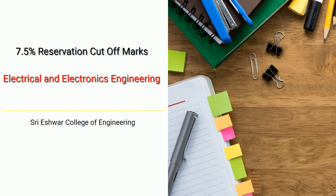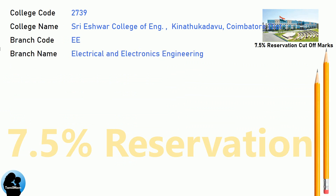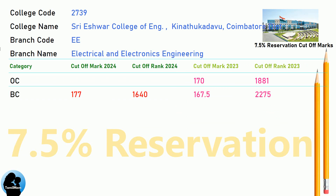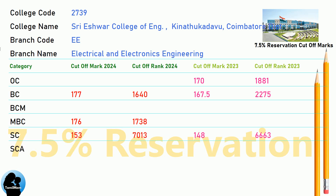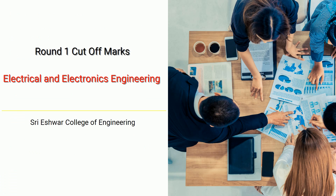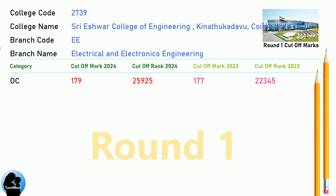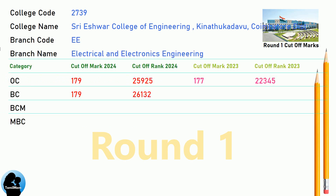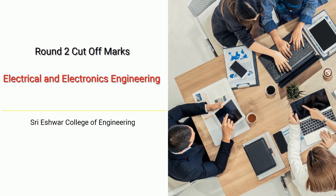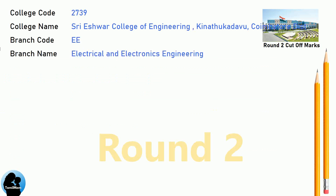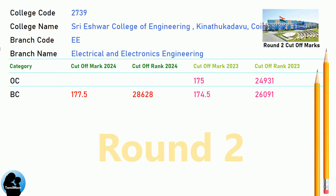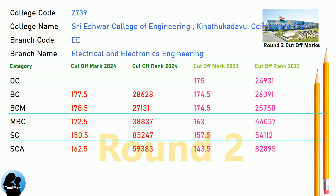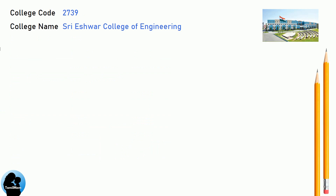DNA 7.5 Reservation Cut-Off for Shri Aishwara College of Engineering in Electrical and Electronics Engineering. DNA Round 1 Cut-Off for Shri Aishwara College of Engineering in Electrical and Electronics Engineering. DNA Round 2 Cut-Off for Shri Aishwara College of Engineering in Electrical and Electronics Engineering. DNA Cut-Off for Shri Aishwara College of Engineering in Information Technology.